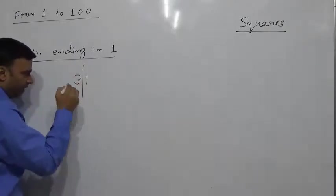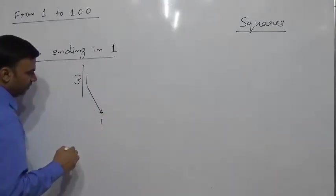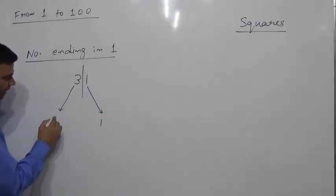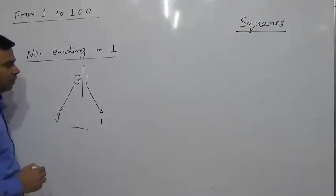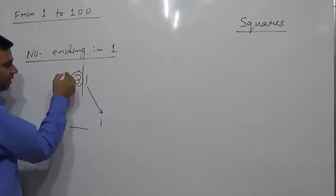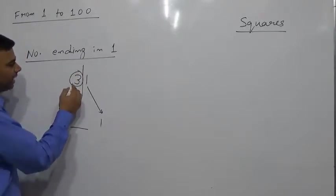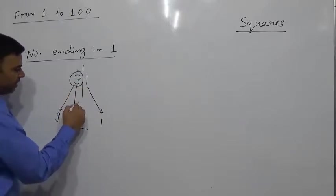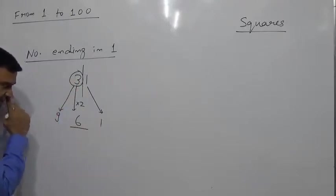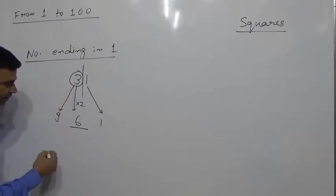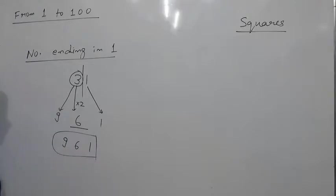Separate 1 from the number. Take square of 1 as 1, take square of 3 as 9, and in the middle multiply the remaining part of the number (other than 1) by 2 — so 3 × 2 = 6. The square of 31 is 961.